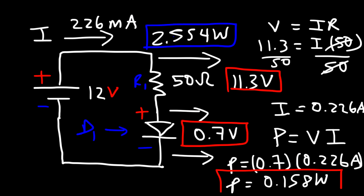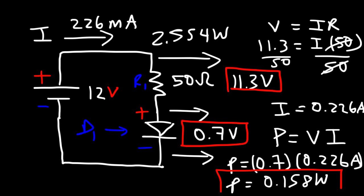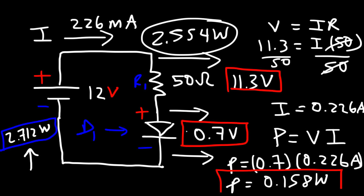The power delivered by the battery is 12 volts times 0.226 amps, which equals 2.712 watts. Notice that 2.554 plus 0.158 equals 2.712 — the power delivered by the battery equals the power consumed by all elements in the circuit. This confirms that the energy transferred from the battery equals the energy consumed by the resistors, diodes, and other elements. Power represents the rate at which energy is transferred.